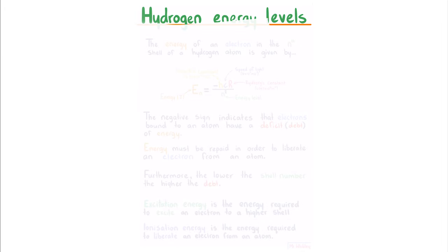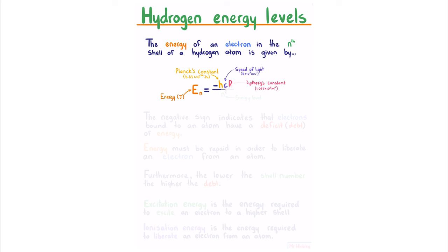Hydrogen energy levels. The energy of an electron in the nth shell of a hydrogen atom is given by En is equal to negative Planck's constant multiplied by the speed of light multiplied by Rydberg's constant and divided by the energy level squared.